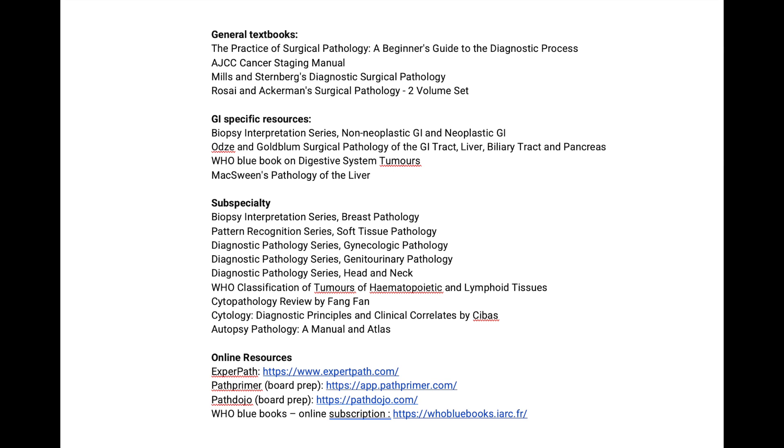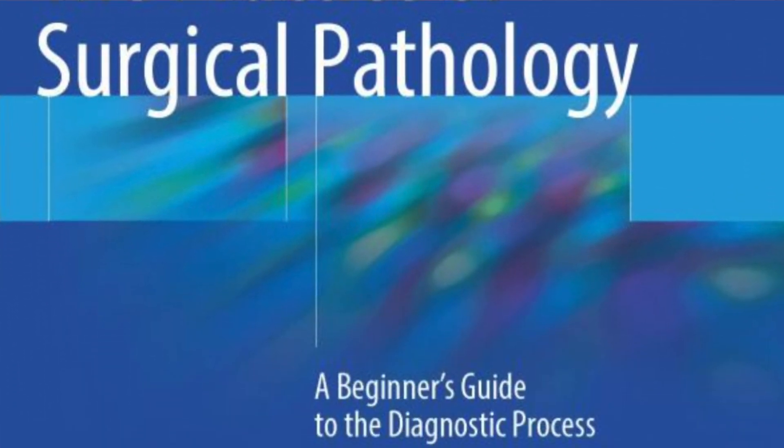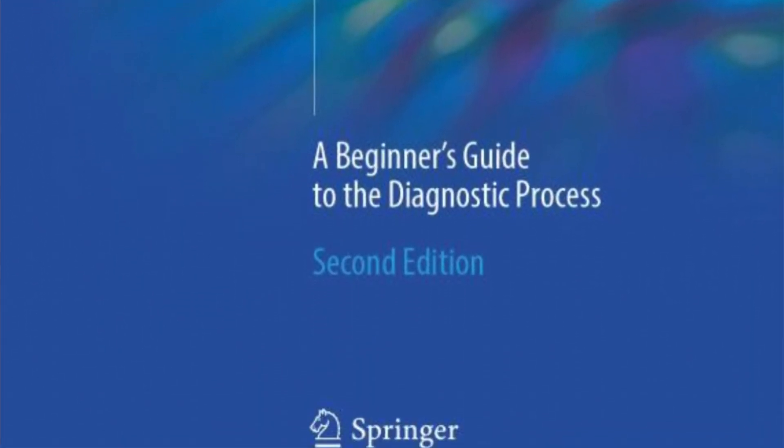Let's get started with general pathology resources. If you are a medical student or a very fresh PGY-1, I highly recommend the Malavi's book, The Practice of Surgical Pathology: A Beginner's Guide to Diagnostic Process. It's a really great, very thin small textbook that lists the most common things you'll see in pathology. It's a great resource to learn the fundamentals — whether you're a medical student trying to impress on rotation or a PGY-1 just trying to figure out where to start.